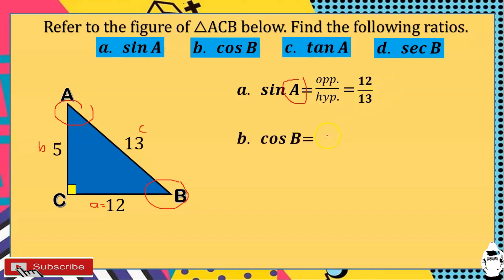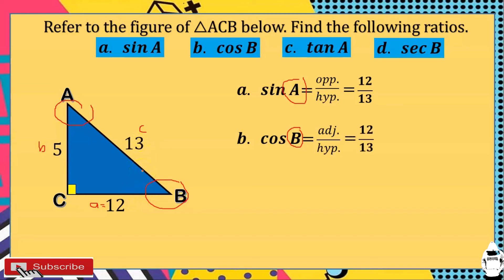Next, cosine B. With angle B as the reference angle, cosine is adjacent over hypotenuse. The adjacent side from angle B is 12, and the hypotenuse is 13. So cosine B is equal to 12 over 13.